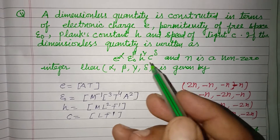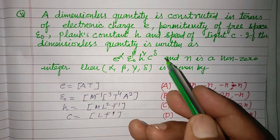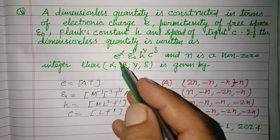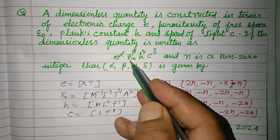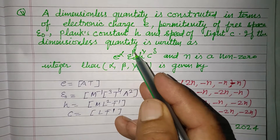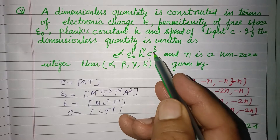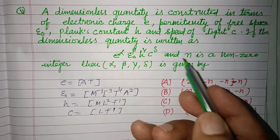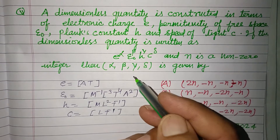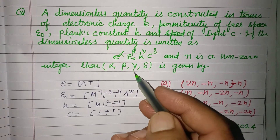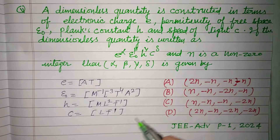Now the question says: if the dimensionless quantity is written as E to the power alpha, Epsilon naught to the power beta, H to the power gamma, and C to the power delta, and N is a non-zero integer, then what are alpha, beta, gamma given by?